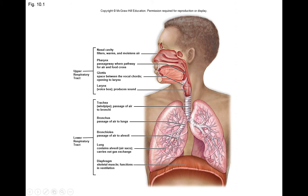The pharynx is another name for the throat. Right here it's a common passageway for both food and air. Behind here is the esophagus, which heads to the digestive tract. But in front is the trachea below and the larynx above.